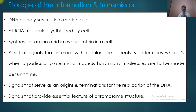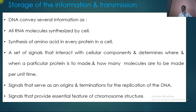Regarding storage and transmission of information: DNA conveys information for all RNA molecules synthesized by the cell — whether mRNA, tRNA, or rRNA — these molecules are synthesized from DNA. DNA also directs the synthesis of all proteins in a cell. The double-stranded DNA information is converted into single-stranded mRNA, and on that mRNA, every three nucleotides form one codon, which corresponds to one amino acid. The sequence of codons on mRNA determines the sequence of amino acids and thus the protein synthesized.